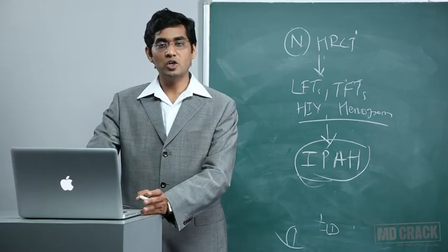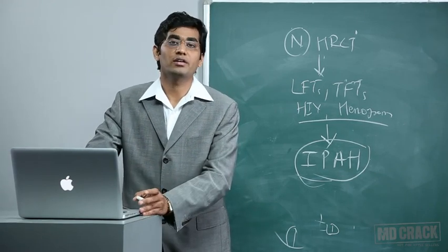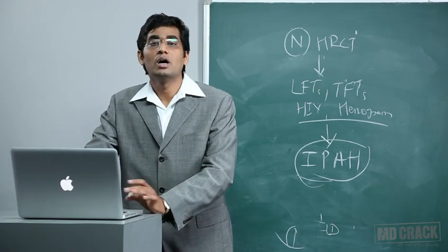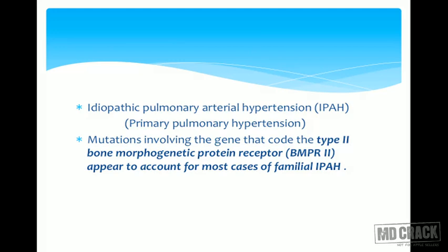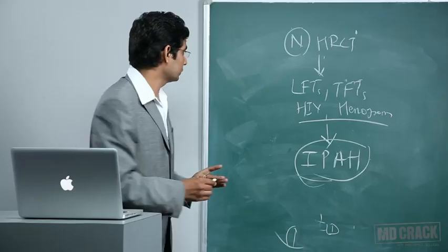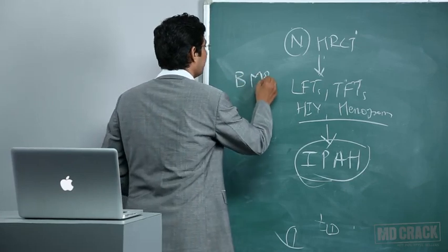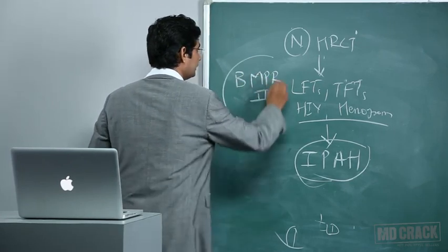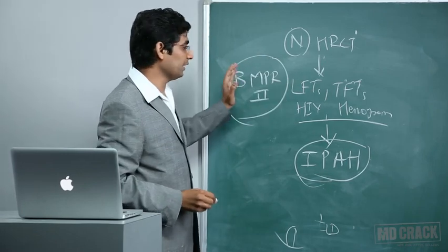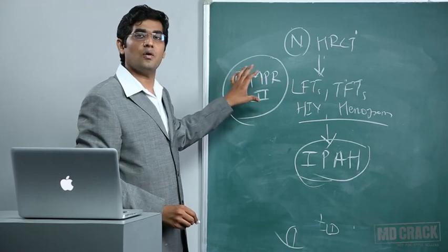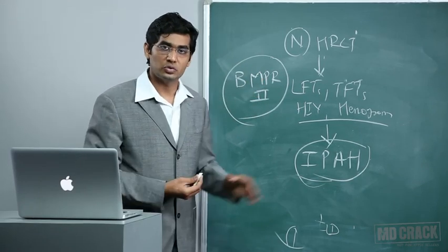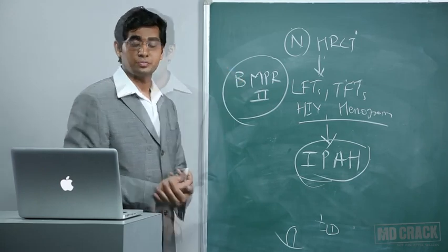IPAH is also called primary pulmonary hypertension. It can be familial, involving abnormal genes. An important MCQ point: mutations in the gene coding for type 2 bone morphogenetic protein receptor — BMPR2 — have a close association with familial pulmonary hypertension.